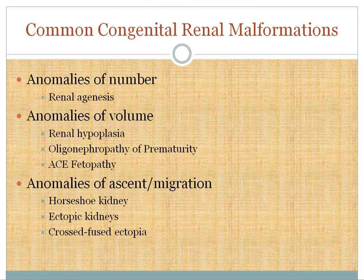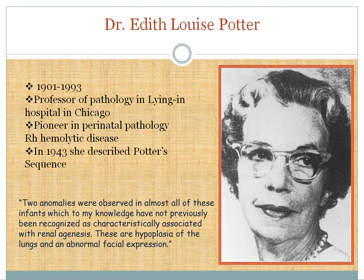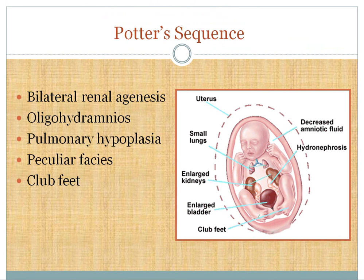An important concept when assessing kids born with congenital anomalies is Potter's sequence. Edith Potter (1901–1993), a professor of pathology at Lying-In Hospital in Chicago, pioneered perinatal pathology including Rh hemolytic disease. She described a sequence of events resulting from a single anomaly, observing that two findings — pulmonary hypoplasia and an abnormal facial expression — were characteristically associated with renal agenesis.